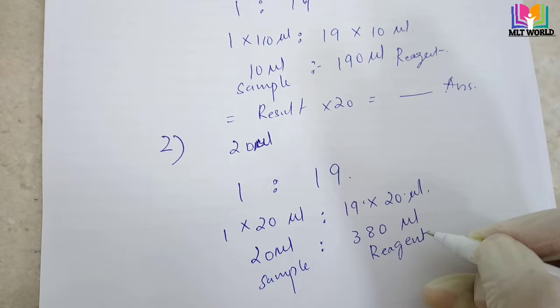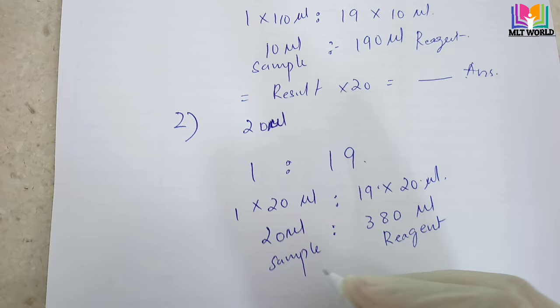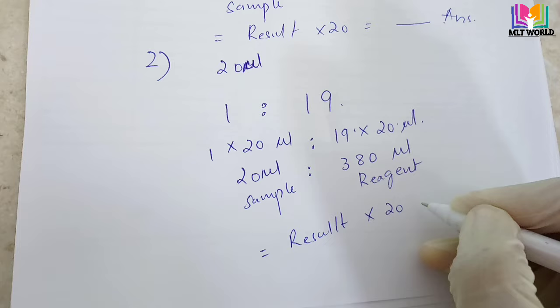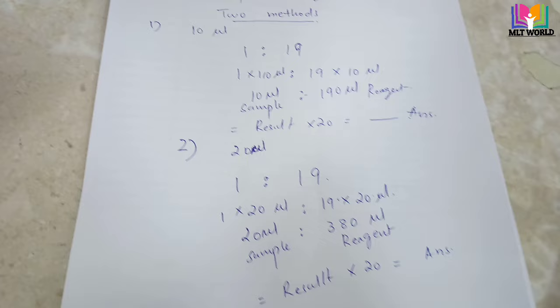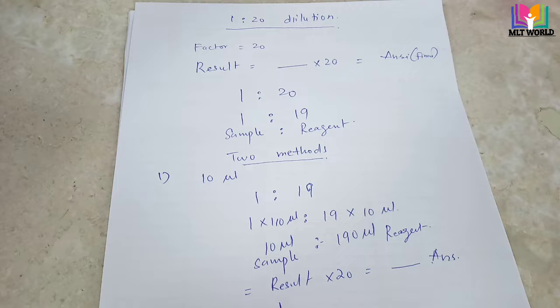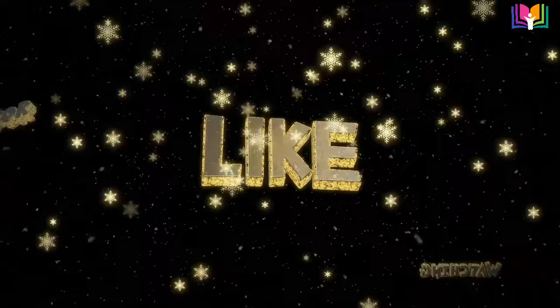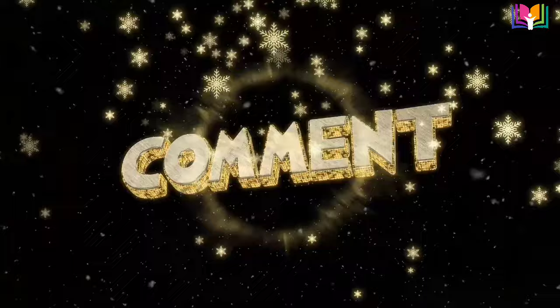In the same way, whatever answer we get we will multiply by 20 and our result will come. Similarly, if you have more quantity you can use 30 microliters — multiply 1 x 30 and 19 x 30. Or 40 microliters — 1 x 40 and 19 x 40 — same concept. Now I hope you understand the concept of 1 to 20 dilution, how this dilution is made, and what methods we can use to dilute our sample and reagent.